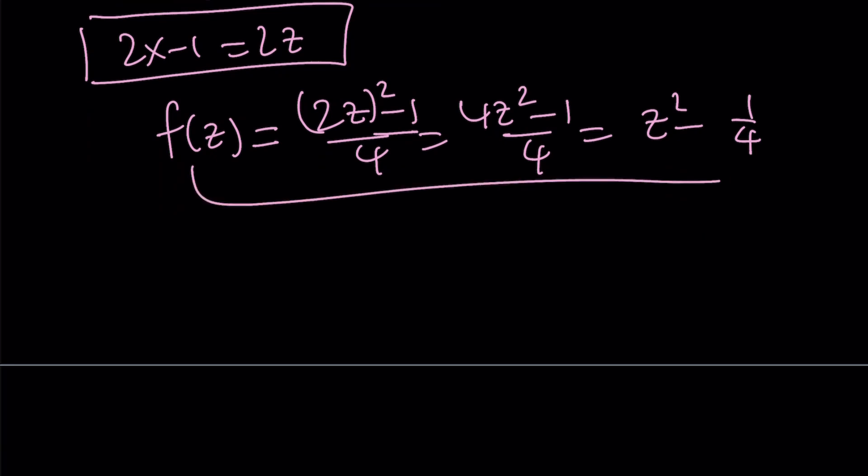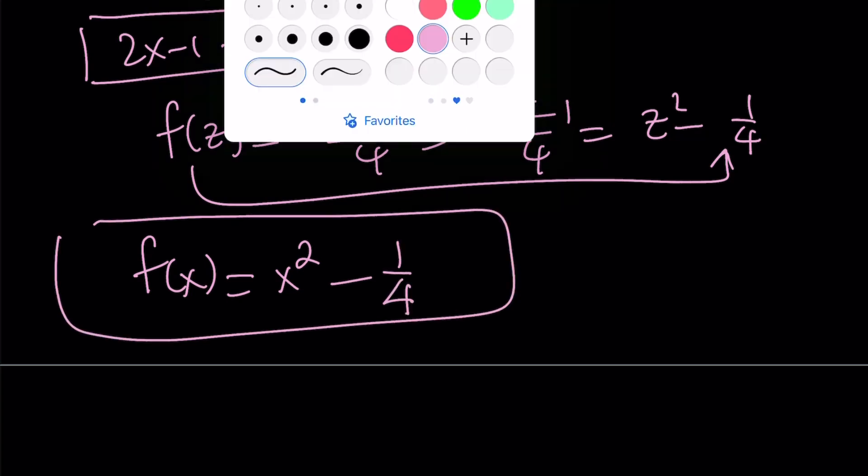This is f of z. Remember, I want to write it as f of x, and that becomes x squared minus 1 fourth. This brings us to the end of the second method and to beginning of the third method.